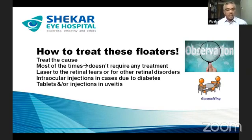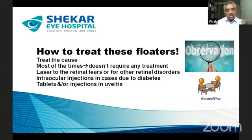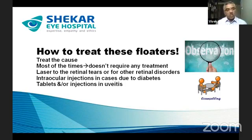Whatever the cause, treatment is directed accordingly. The most common causes — vitreous degeneration and posterior vitreous detachment — do not require any treatment. In more than 90 percent of cases no treatment is needed. However, if there are other disorders like retinal tears or detachment, retinal blood vessel disorders due to diabetes or blood pressure, or uveitis, they need treatment that may include laser, injections into the eye, or tablets depending on the cause.